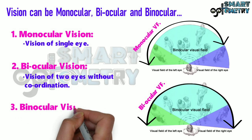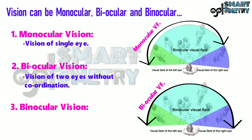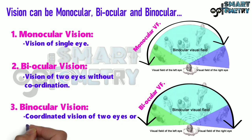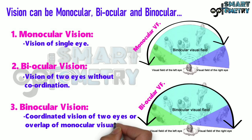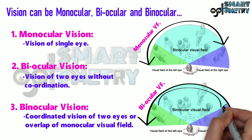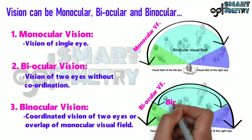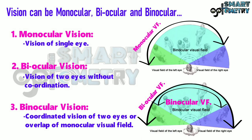3. Binocular vision: it is a coordinated vision of two eyes, or the overlap of monocular visual fields. Here you can see the binocular visual field.